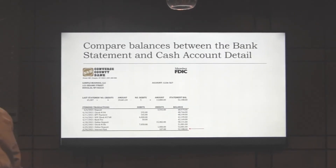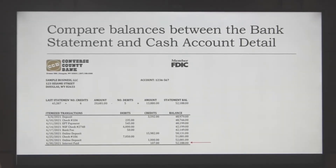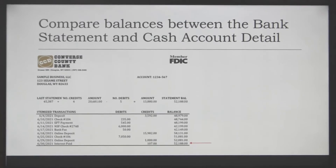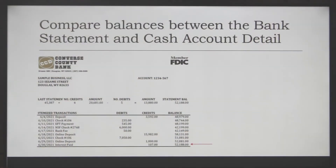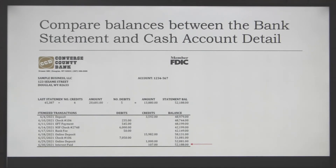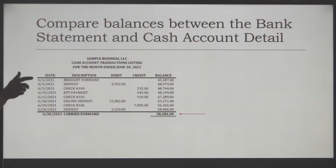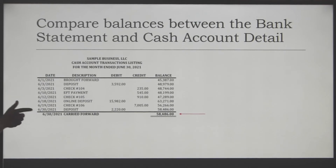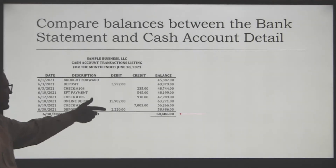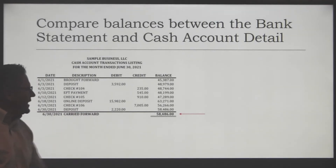One of the things to remember when you're looking at these: if you're a board member or on a finance committee, you're going to want to make sure that when you get the bank reconciliation, you also get a copy of the bank statement, which will have copies of deposits and checks that have cleared during the month. The next thing you'll need is the cash account detail from your accounting system. This will have all of the transactions recorded in the accounting software for the cash account that we're trying to reconcile.